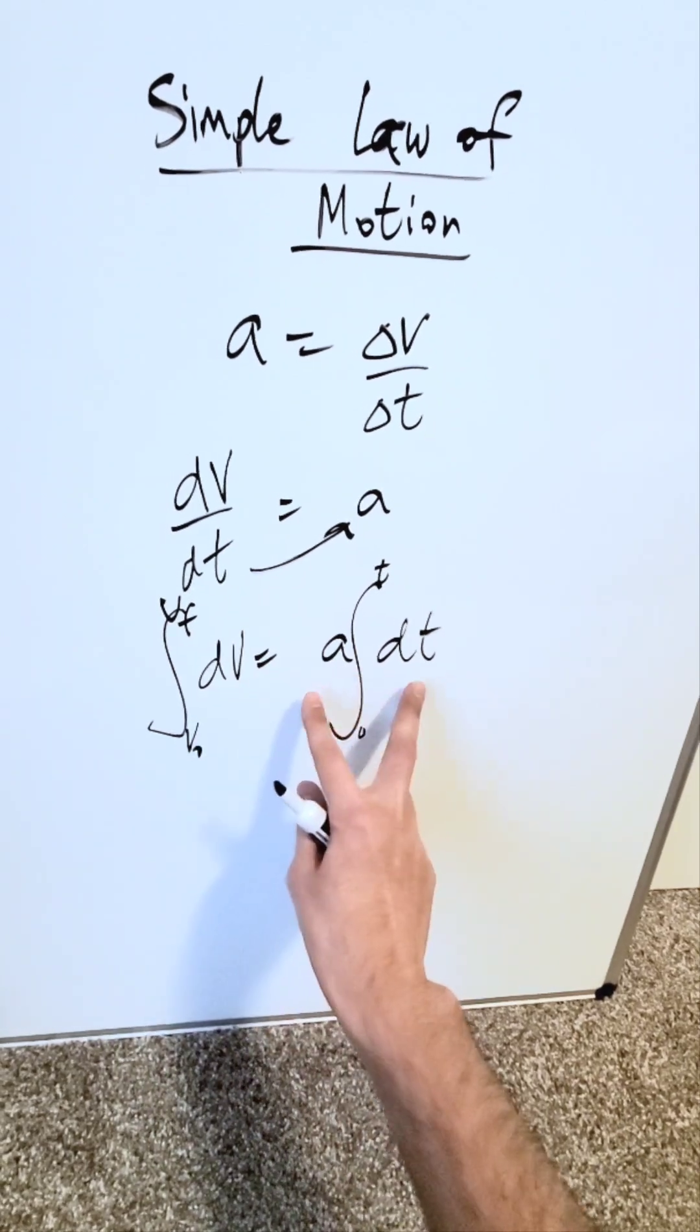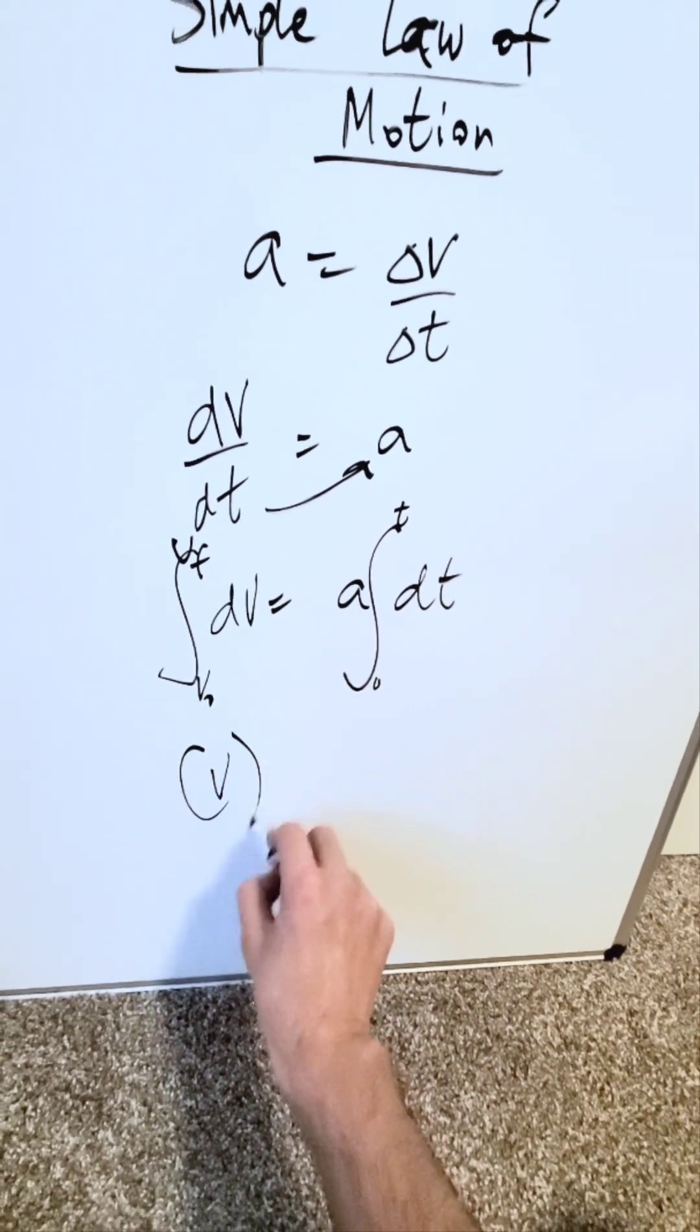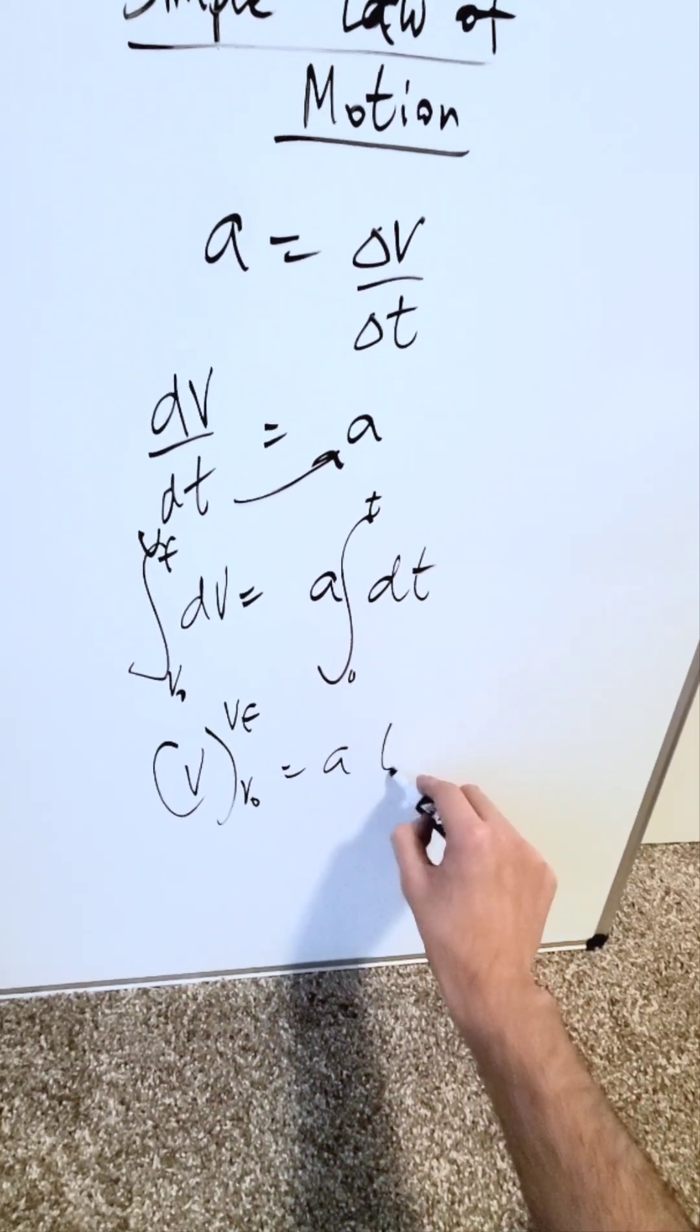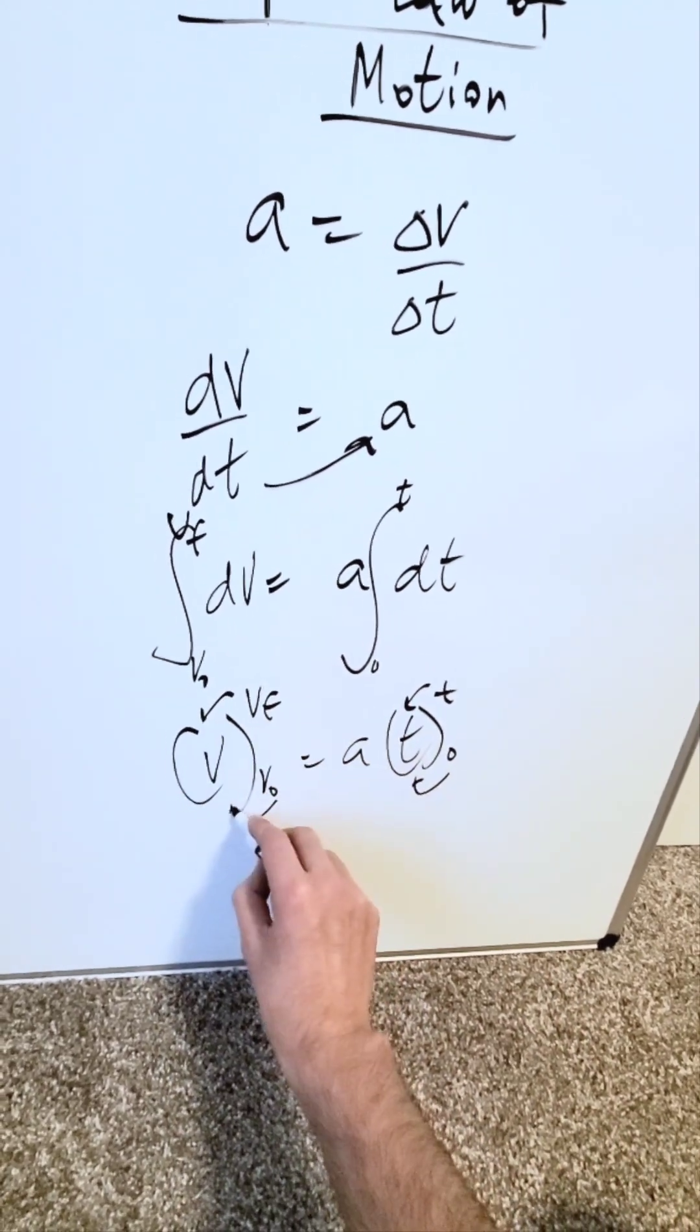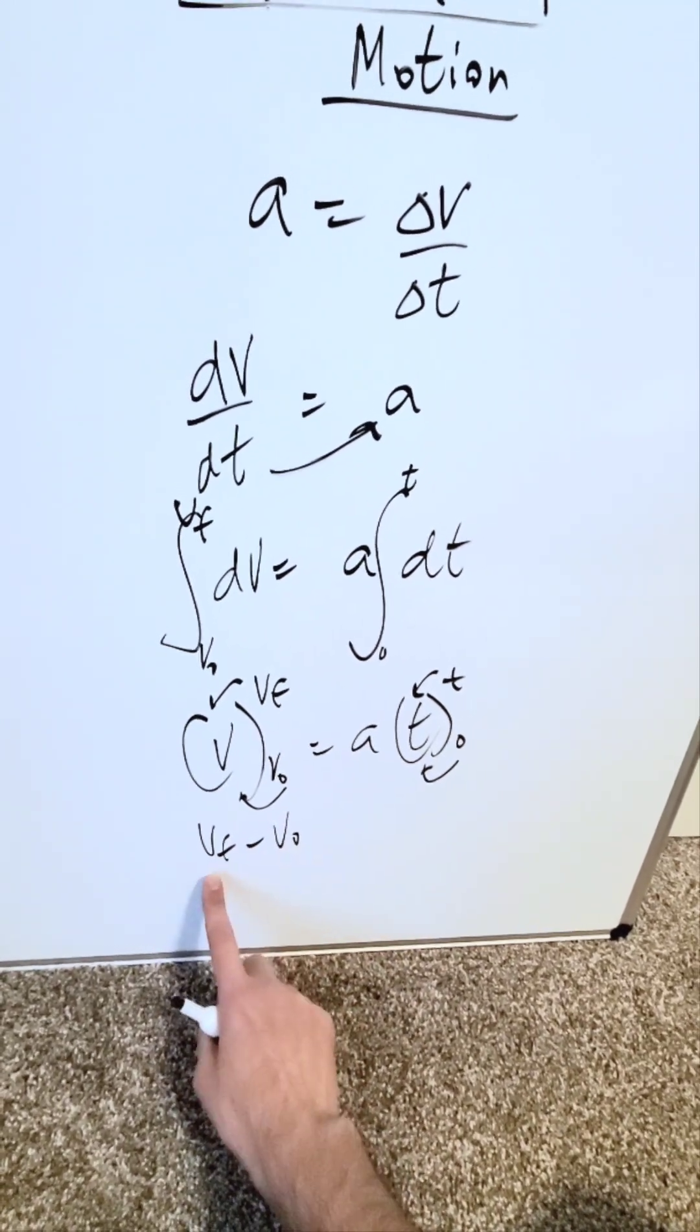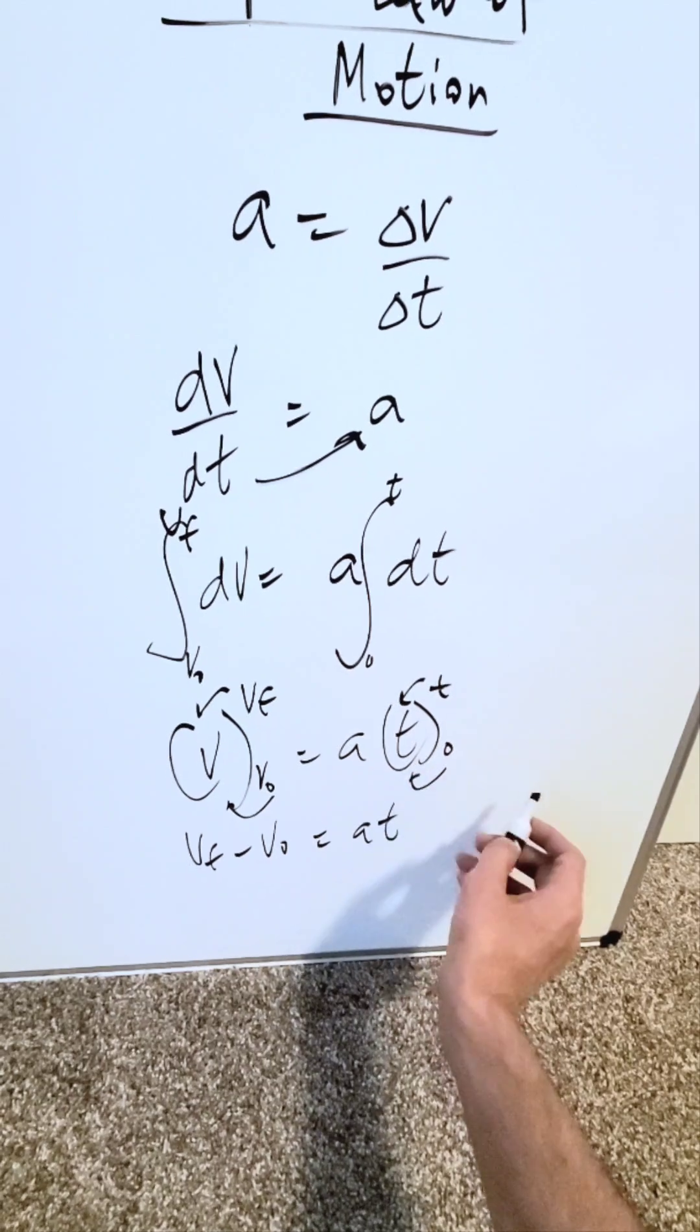When you integrate your variables, what do you have? In terms of velocity, the velocity variable will come out and you'll have a vf and a vo. With respect to time, you'll have your time variable. It will come t and a zero. You put the upper limit, the lower limit, and the difference of the two. You have vf minus vo. Final velocity minus initial velocity is equal to at because zero coming here is meaningless.